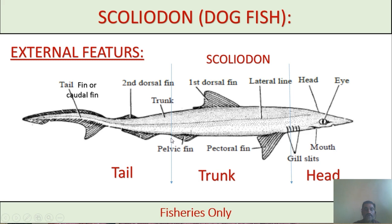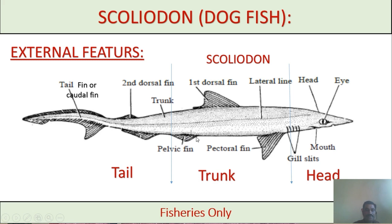The trunk region extends from the gill slits to the cloacal aperture and is the largest part of the body. The trunk bears median fins — first dorsal fin, second dorsal fin, and anal fin — as single fins, and paired fins — the pectoral fin and pelvic fin.